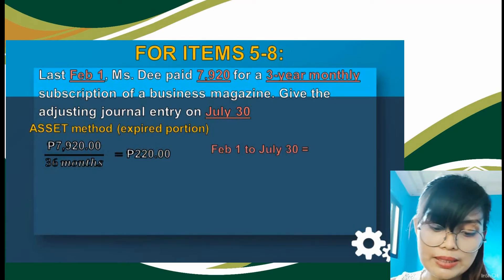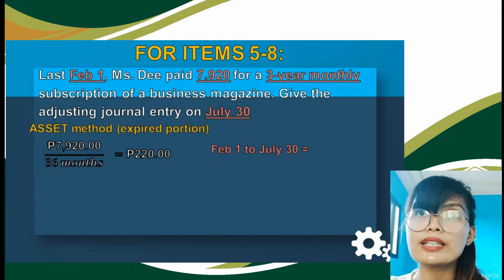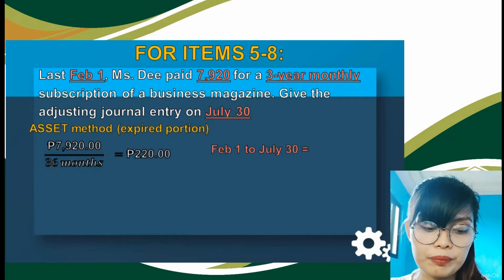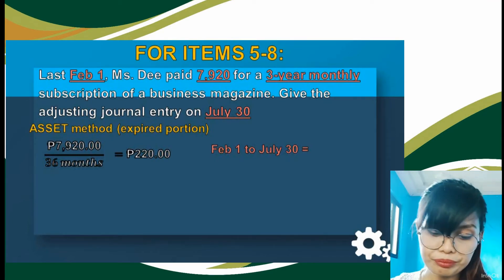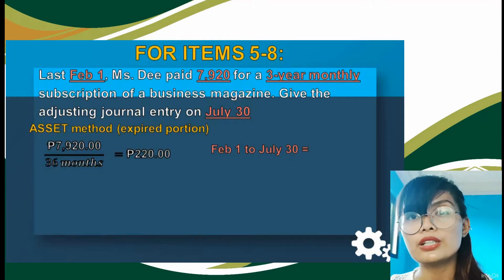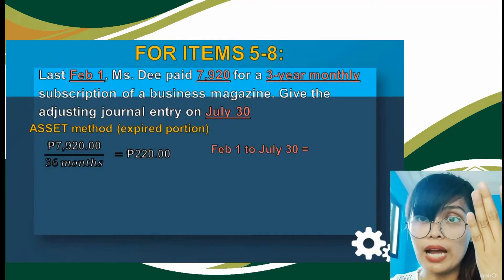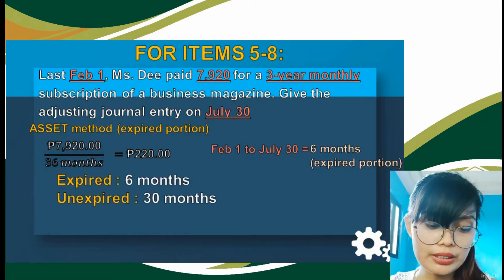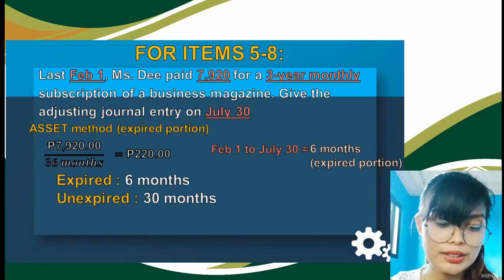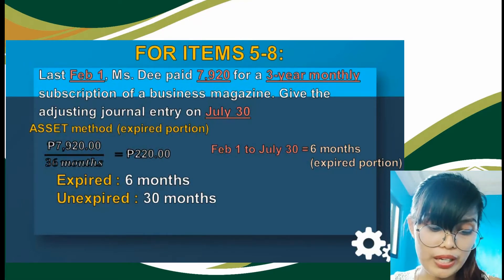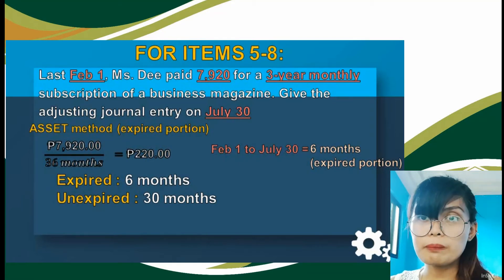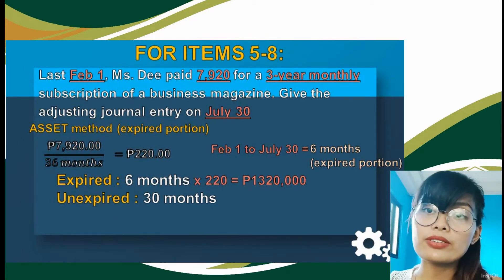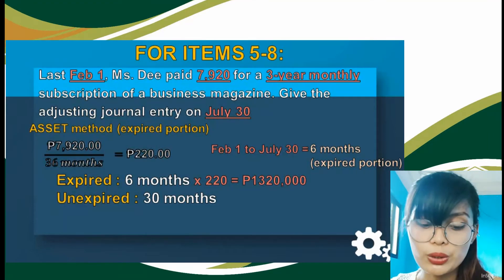To get the expired portion, we need to know how many months have elapsed from the start to the cut-off date. From February 1 to July 30: February, March, April, May, June, July — that's 6 months expired portion. The remaining 30 months is the unexpired portion. Since we are using the asset method, we consider 6 months multiplied by P220 and get P1,320. Take note of that amount for the adjusting entry.